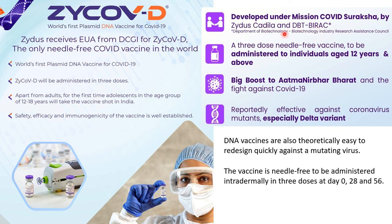ZyCoV-D was originally developed by Zydus Cadila in collaboration with DBT-BIRAC — the Department of Biotechnology. It has been reported to be effective against mutant variants of coronavirus, especially the Delta variant. Another advantage of DNA vaccines is that they are theoretically easy to redesign whenever a mutating virus appears, so if a new variant emerges, the DNA vaccine can be quickly changed to protect against that variant — a switchover that can be done much faster compared to any other vaccine type. Additionally, these DNA vaccines are stable at 2 to 8 degrees centigrade and can even withstand up to 25 degrees centigrade, making ZyCoV-D a game changer in tropical countries like India.